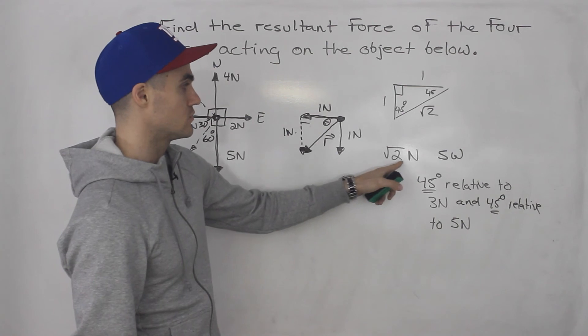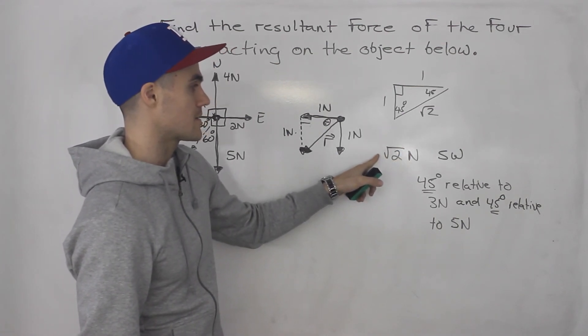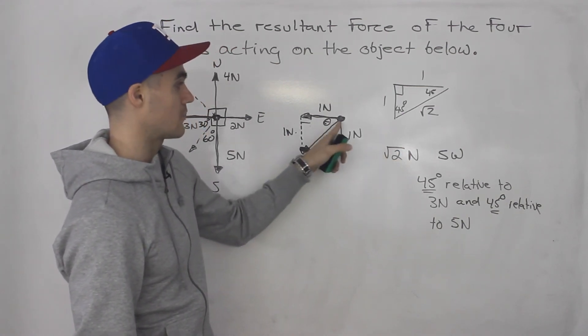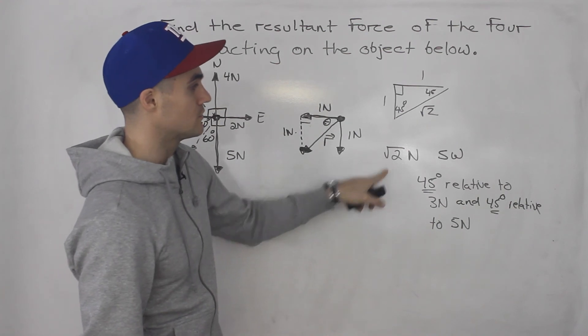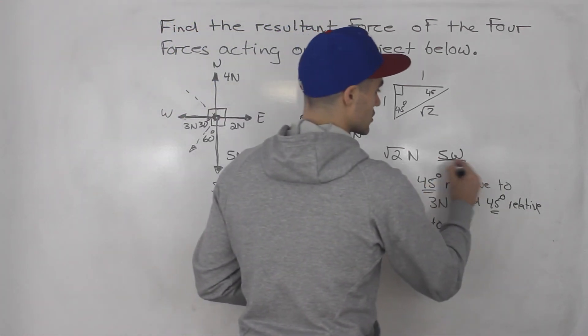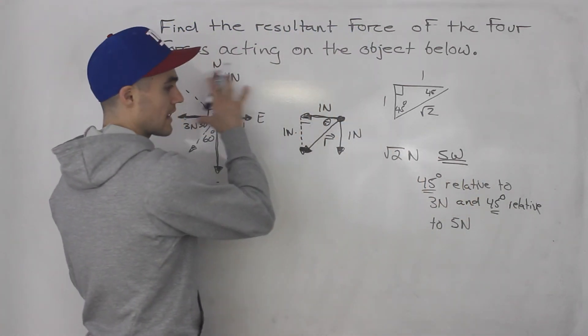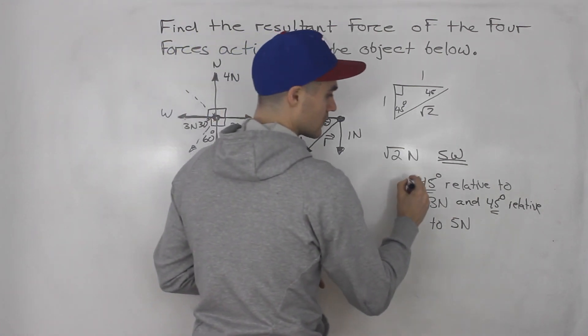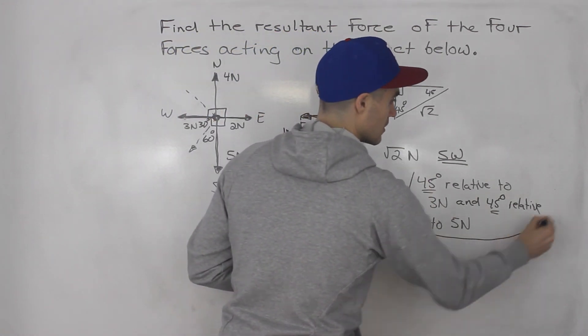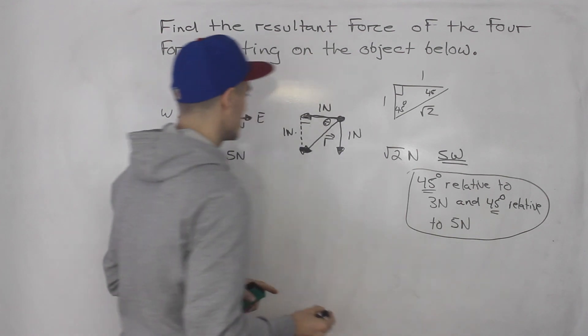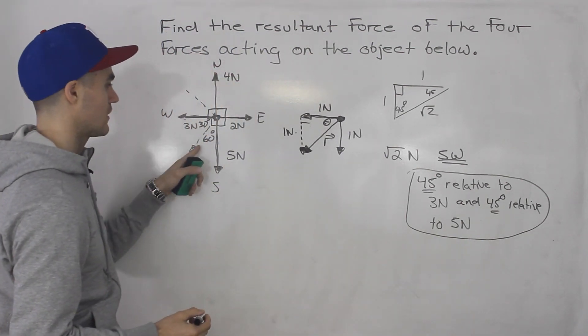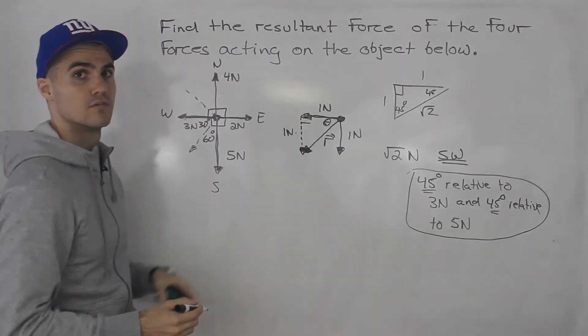So either way, you could say root two newtons. That's definitely the magnitude of that resultant, root two newtons, whether you want to state the direction as southwest, if you're dealing with an actual compass, or if there is no compass, you could say 45 degrees relative to three newtons, and then 45 degrees relative to five newtons.